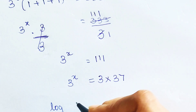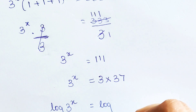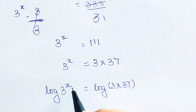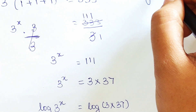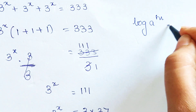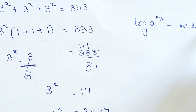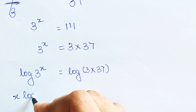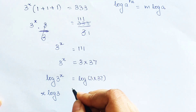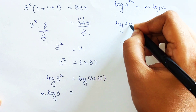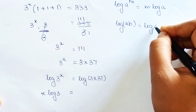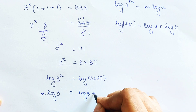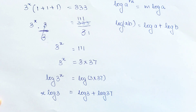So now we still have 3 raised to x equals 3 into 37. In order to find the value of x, we put log on both sides. On the LHS we have log of 3 raised to x. Remember, log of any number raised to an index can be written as m into log a, so this becomes x log 3. And log of any product a into b can be written as log a plus log b.